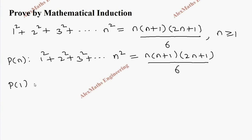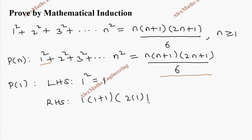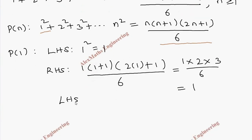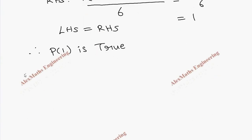Let's take P(1). For P(1), the LHS has only the first term, which is 1² = 1. For the RHS, wherever n appears we substitute 1, so it becomes 1 × (1+1) × (2×1+1) divided by 6, which is 1 × 2 × 3 divided by 6. After cancelling we get 1. So LHS equals RHS, therefore P(1) is true.